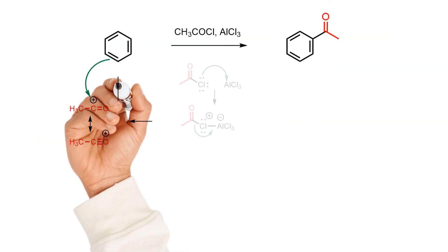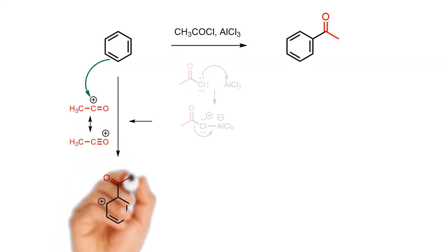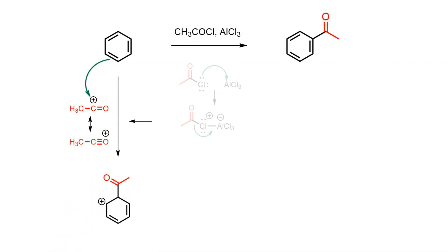The benzene ring is then induced to act as a nucleophile and attacks the electrophilic acylium ion, forming a new carbon-carbon bond and a carbocation intermediate. This is the rate-determining step in this conversion.